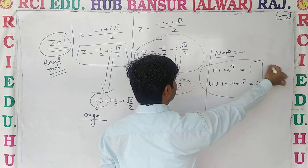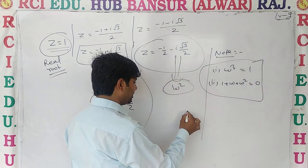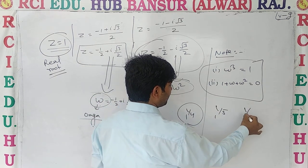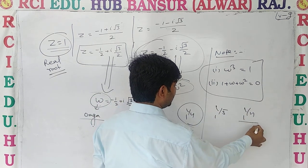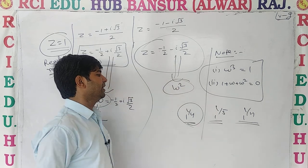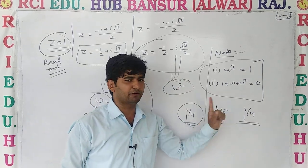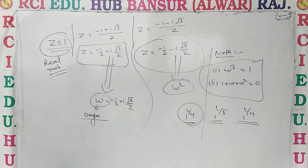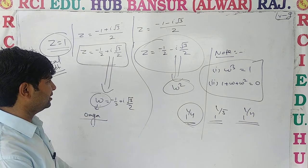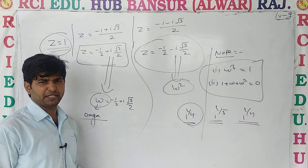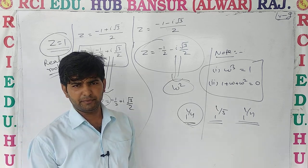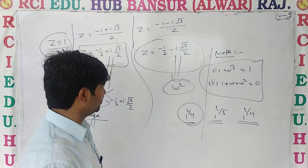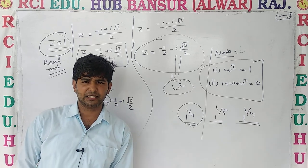Remember these formulas: wherever you find omega cube, its value is one; and one plus omega plus omega square equals zero. These two you must remember. Questions on 1 to the power 1/4, 1/5, or 1/n will be covered in the online class. I hope you understood this topic clearly. Notes will be available in handwritten form, so no problem. That's all for today.